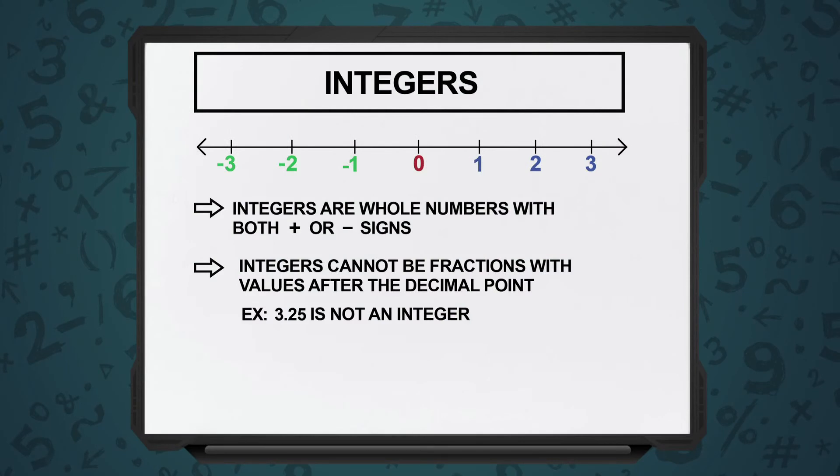And then we saw integers: no decimals, can be zero, can be counting numbers 1, 2, 3, 4, 5, and it could also be negative numbers. Thank you.